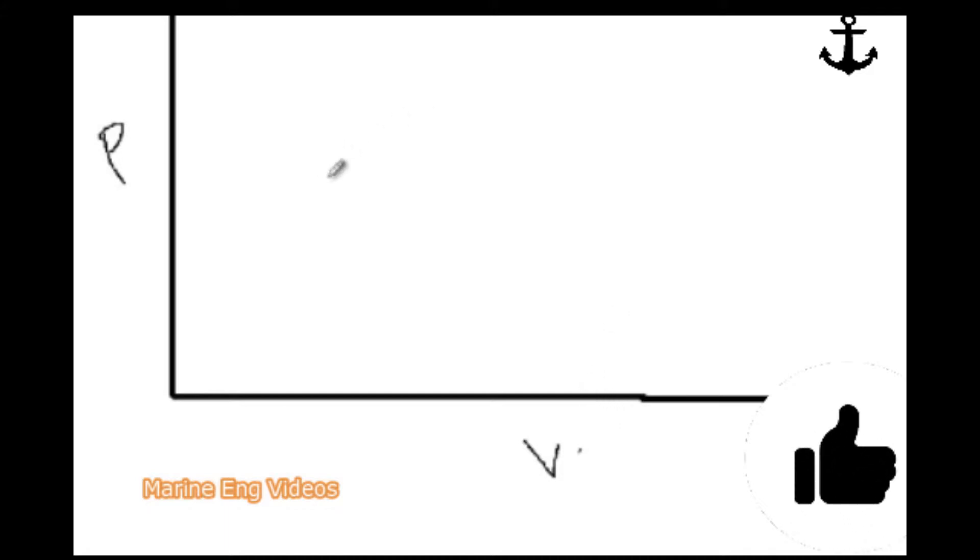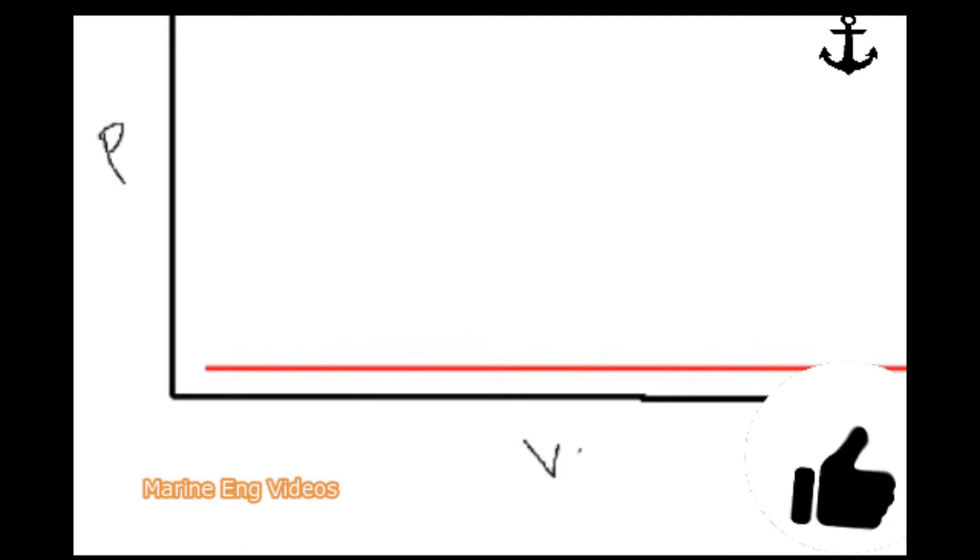Before taking a power card, as usual precautions which you can refer to the textbooks, you've got to draw this atmospheric line. I'll draw the atmospheric line with the help of red color. This is the atmospheric line which indicates the atmospheric pressure.